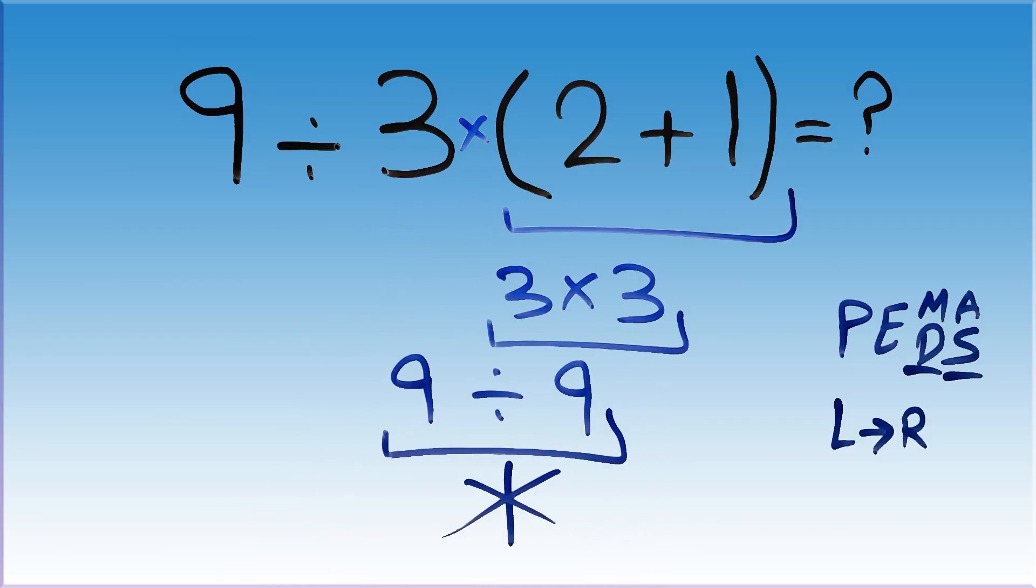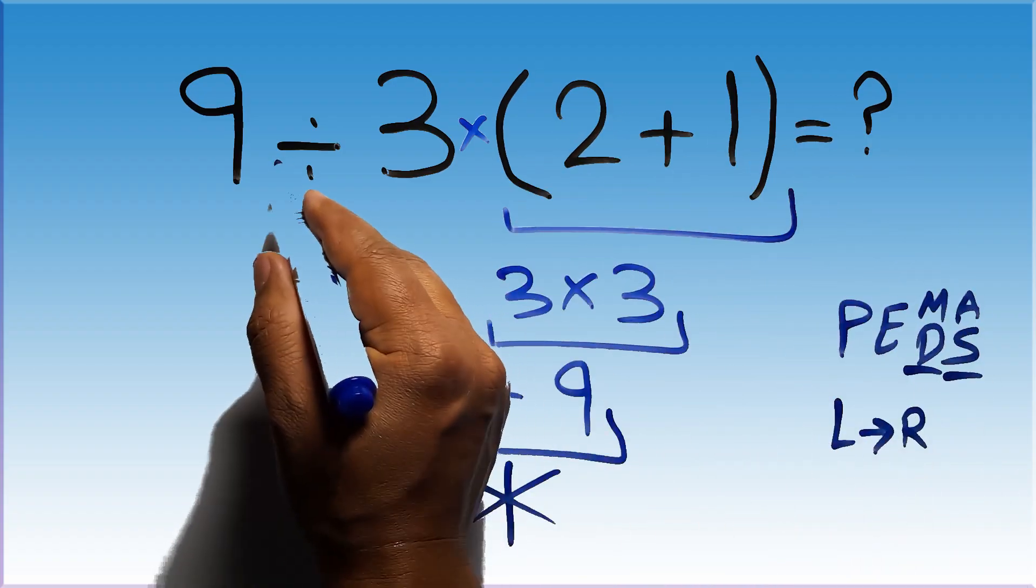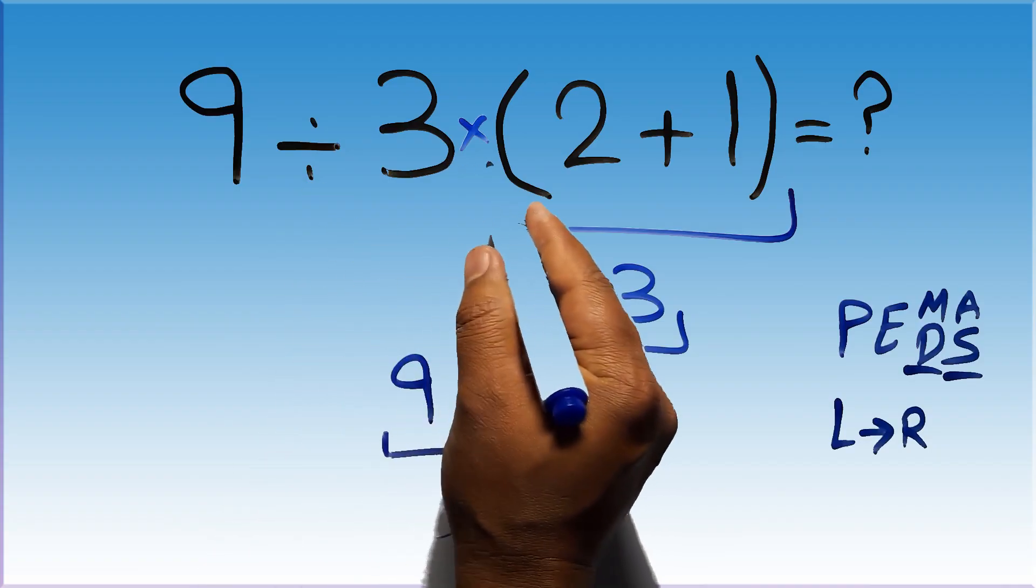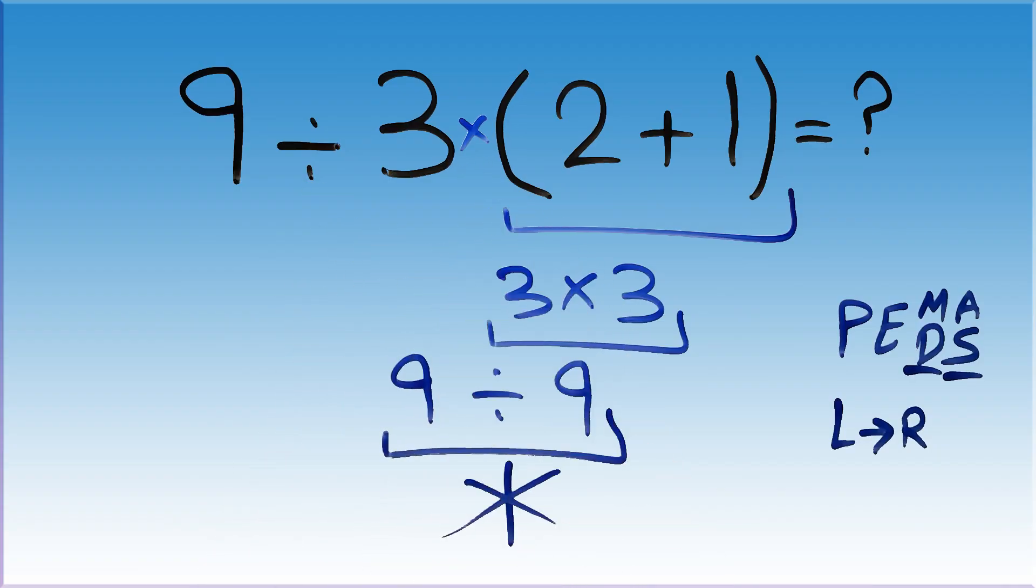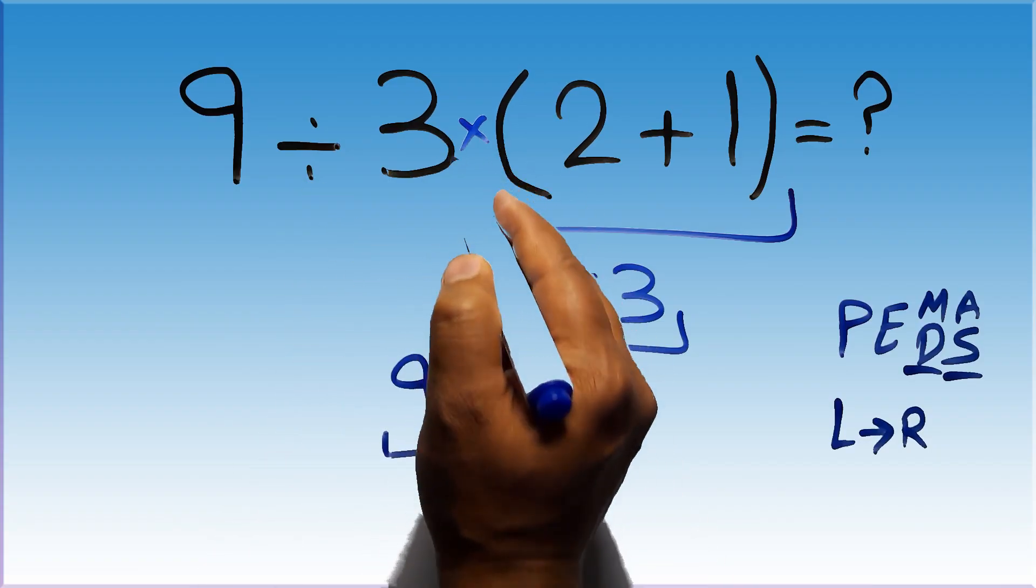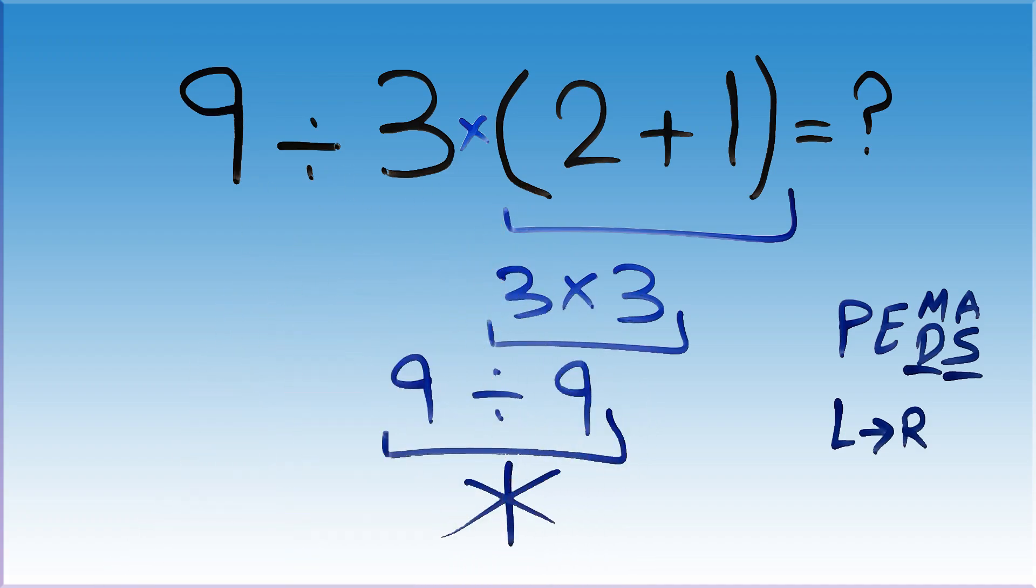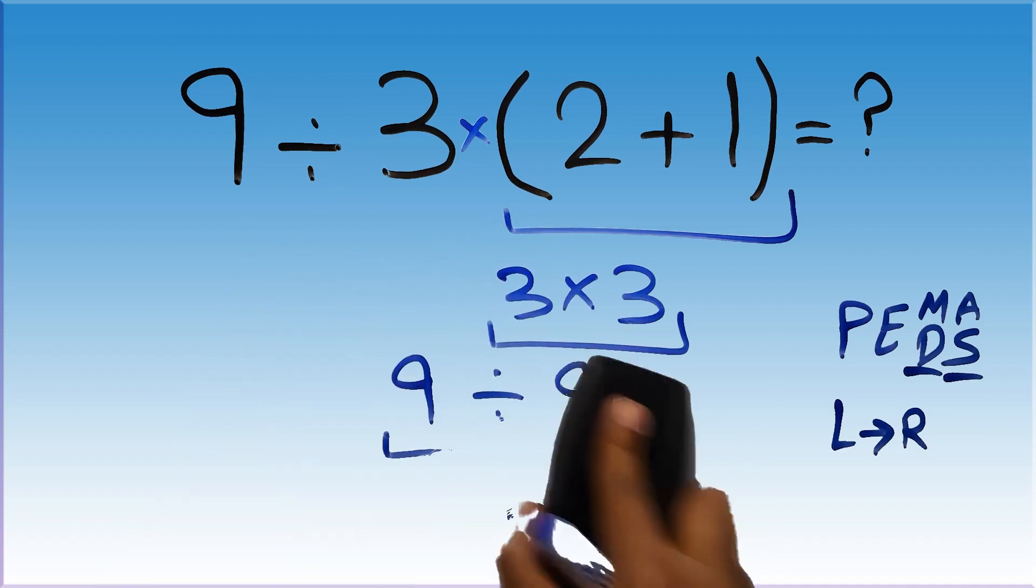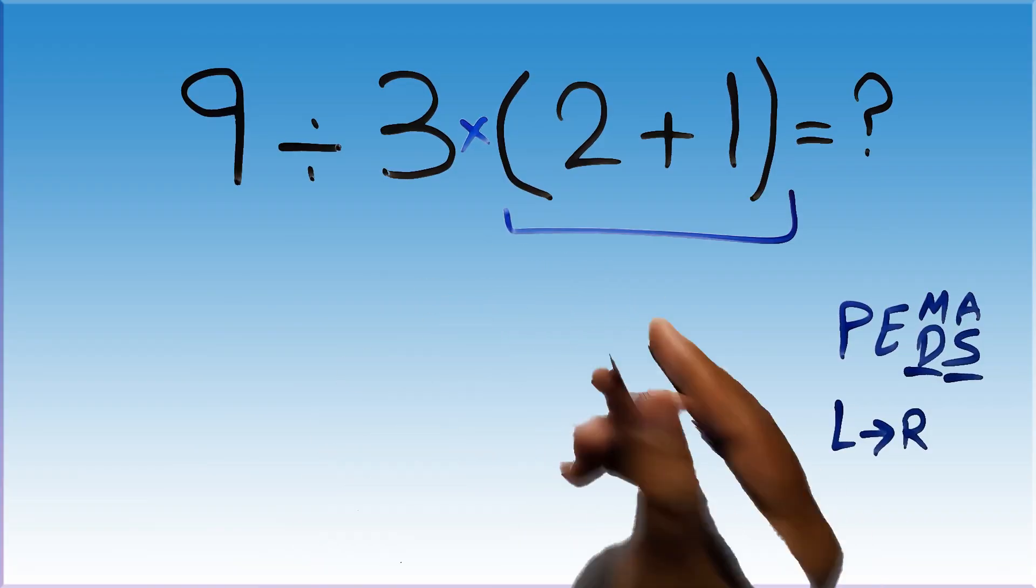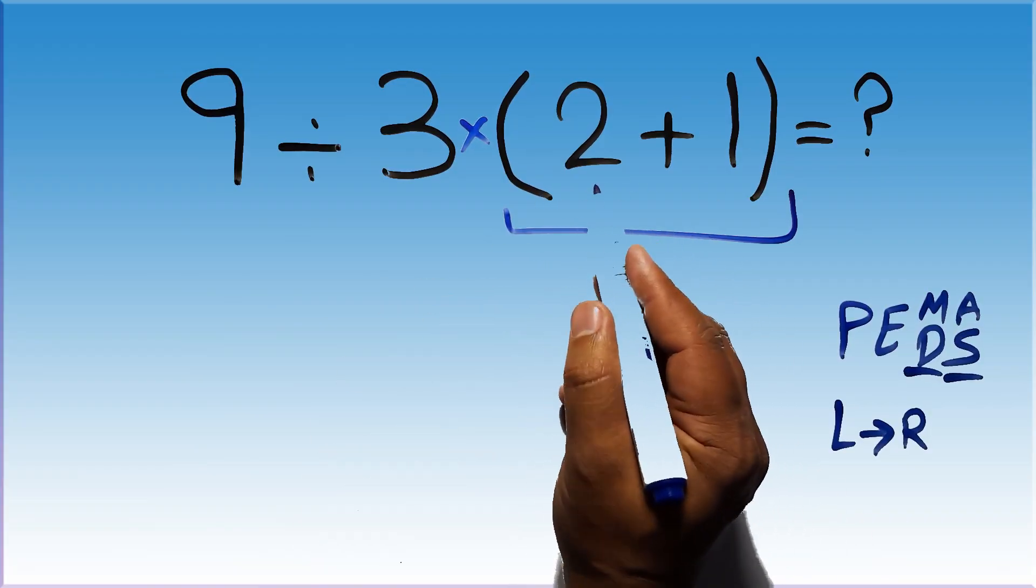Okay, according to PEMDAS, first we have to do these parentheses, then this division, and finally this multiplication. If we do this multiplication before this division it is wrong. So first, this parentheses: inside this parentheses we have